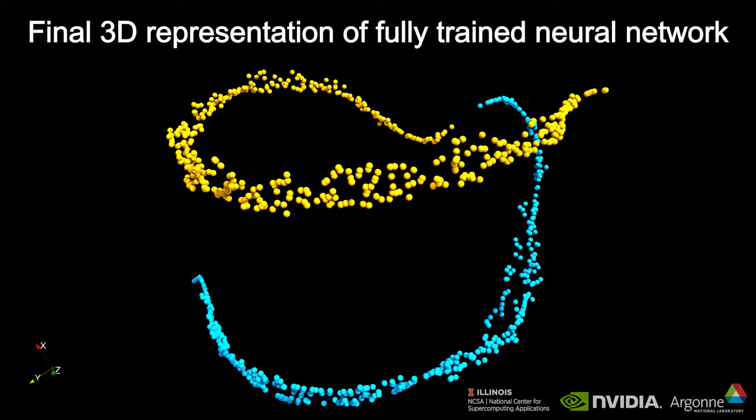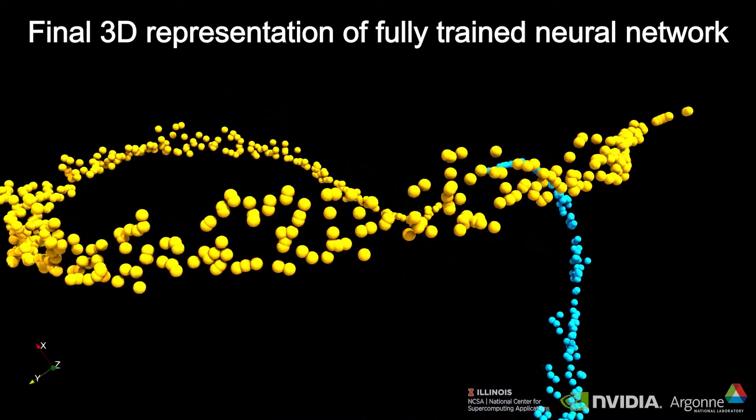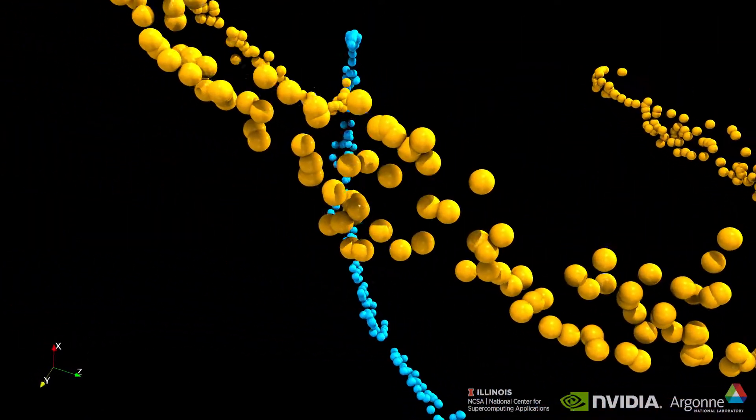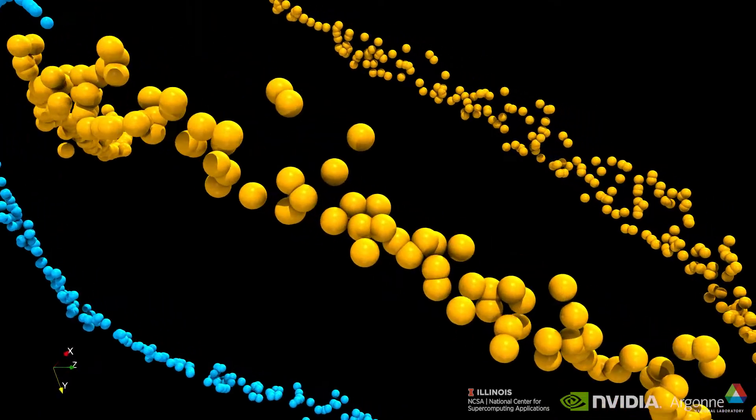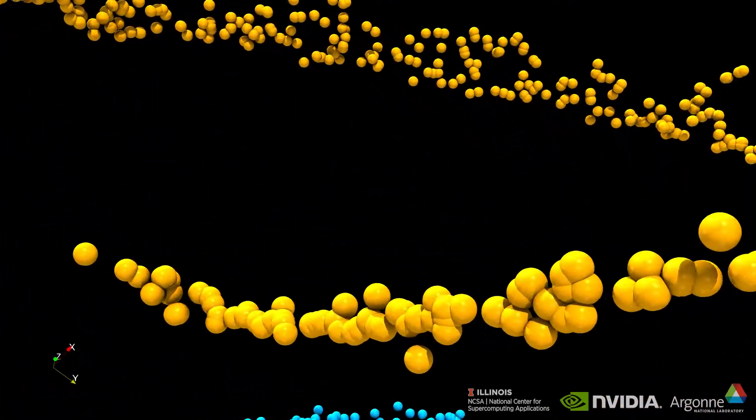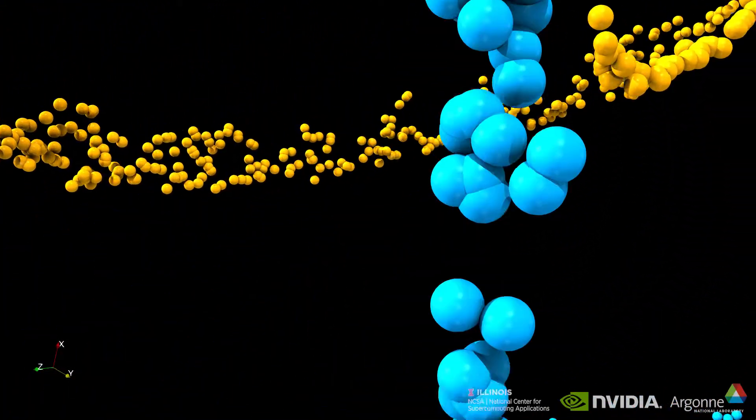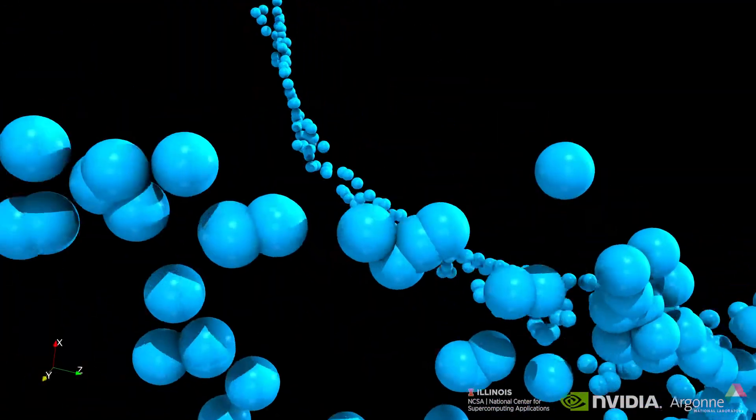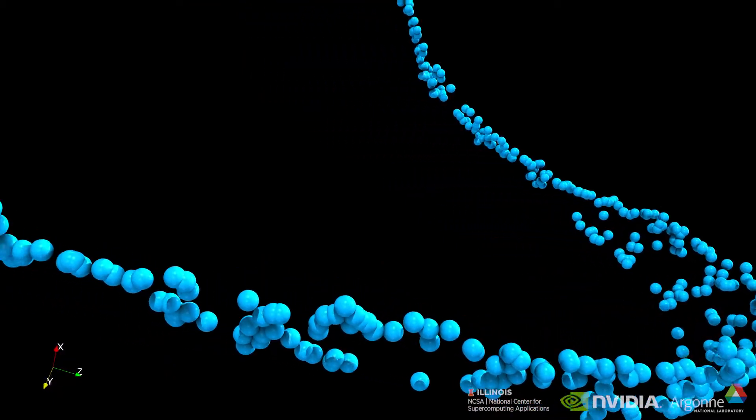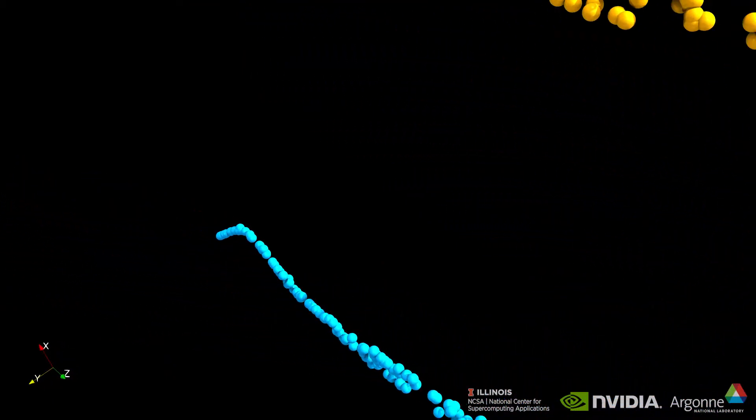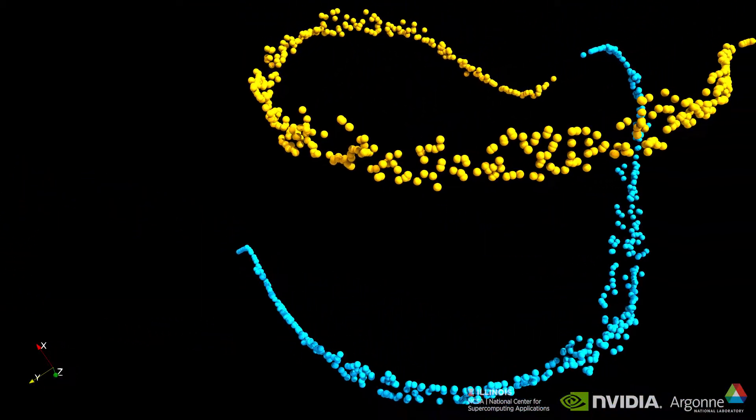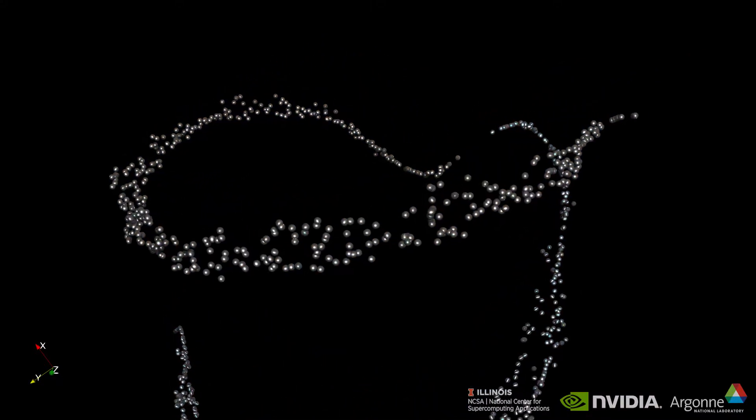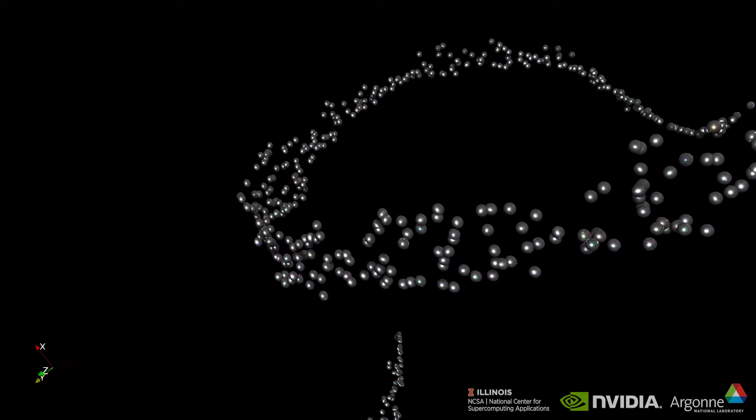This is the final 3D representation of what the network has learned for a sample catalog of over 1000 galaxies. The spiral and elliptical galaxies form two very distinct clusters of yellow and blue points with no overlap. Looking again at the actual galaxy images, we find that the network has correctly separated these two classes.